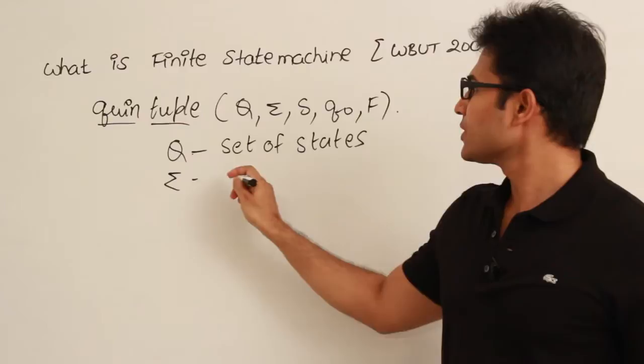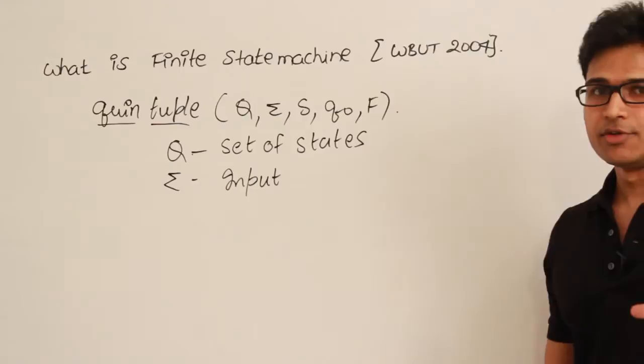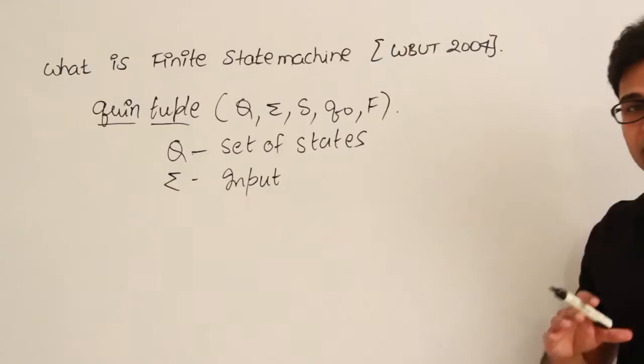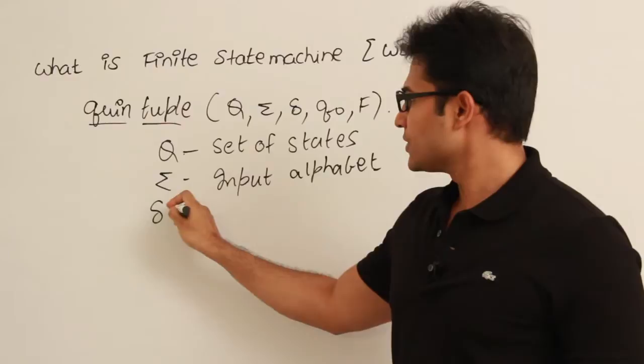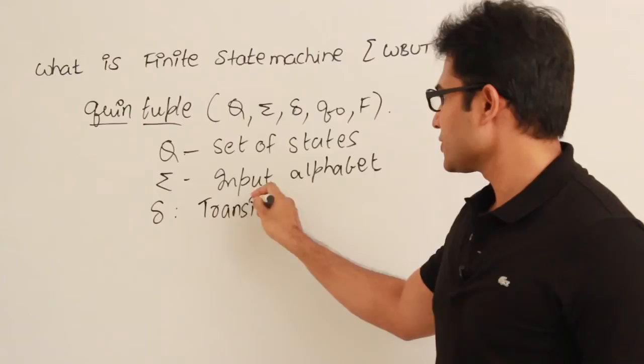Here, capital Q is the set of states, and sigma is the input alphabet. I'll give an example shortly — I'm just writing down the things you should write in the exam. Delta, this symbol, is called the transition function.